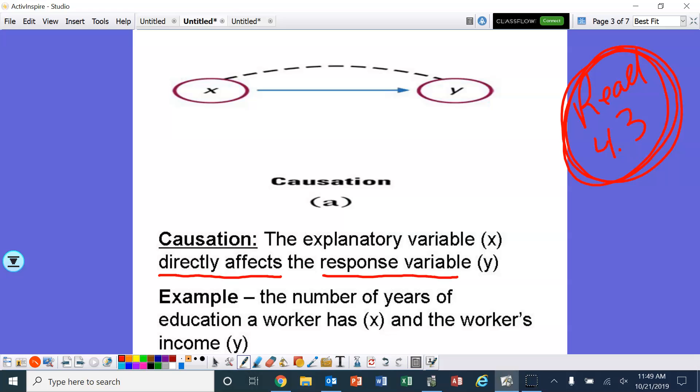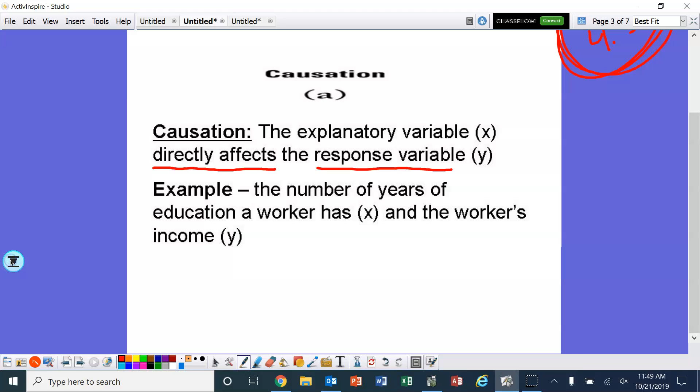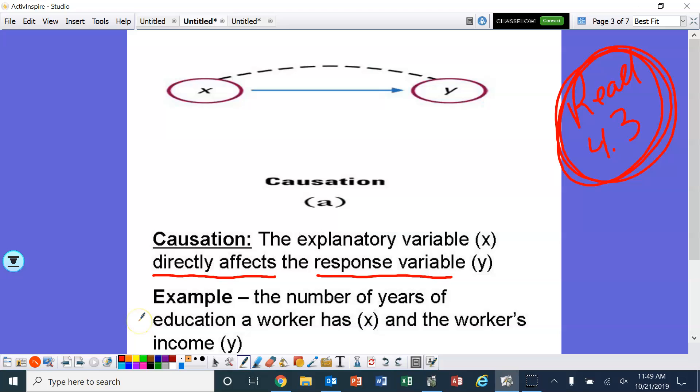Now, the best way to establish causation, however, is with an experiment. That is the best way to establish causation. However, we're not quite there yet. That will be chapter 5. All right, so that's causation.